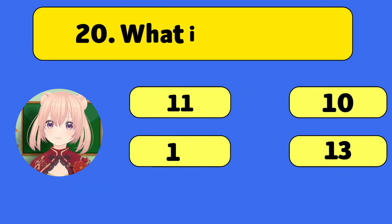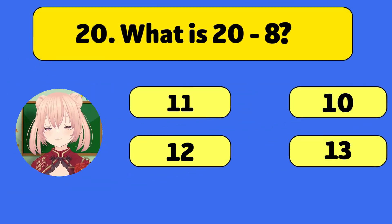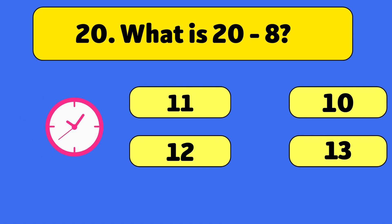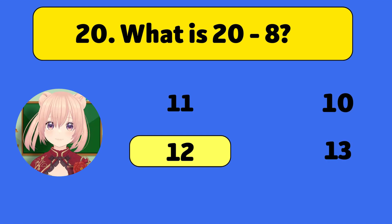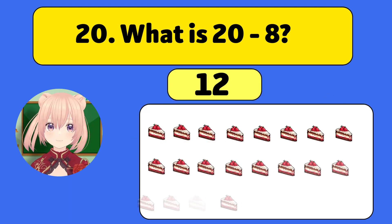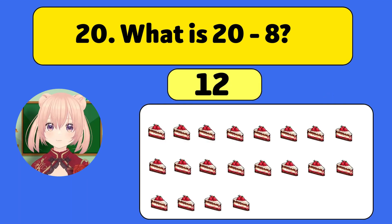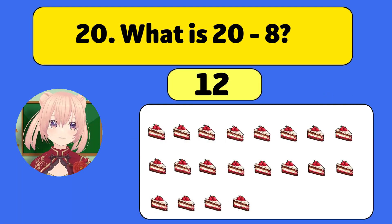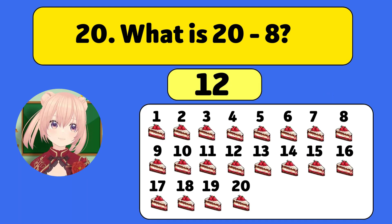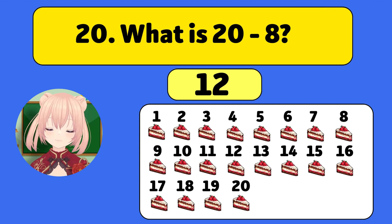What is 20 minus 8? The answer is 12! We start with 20 cakes and take away 8!